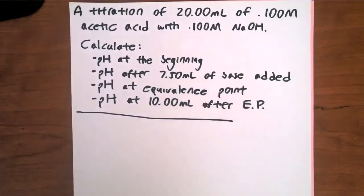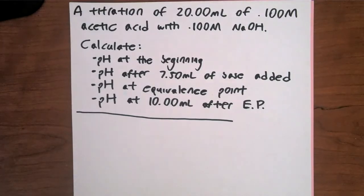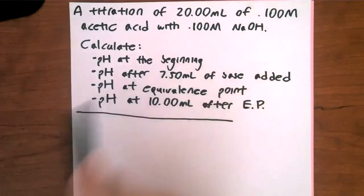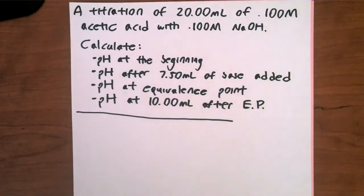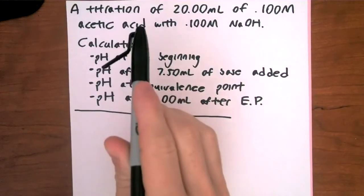I'm going to be using multiple sheets of paper, so feel free to pause or rewind. We have a titration of 20 mL of 0.1 M acetic acid with 0.1 M NaOH. Acetic acid is a weak acid — it's not one of our seven strong acids. NaOH has a group one cation with OH⁻, so it's a strong base. Weak acid plus strong base means we have a titration. Let's find the equivalence point — where all the acetic acid is neutralized.